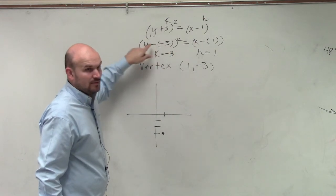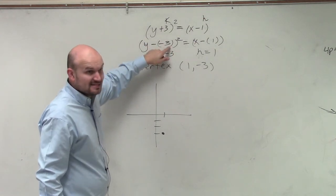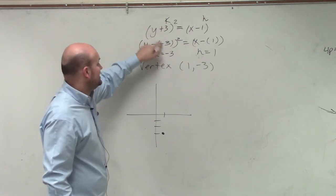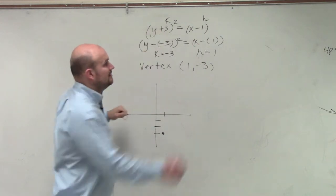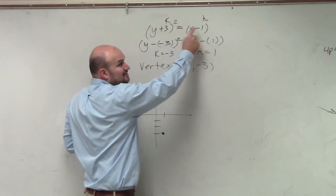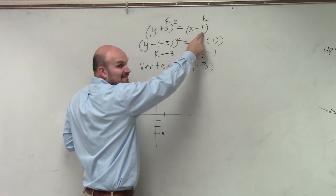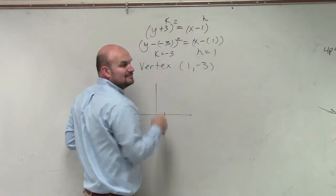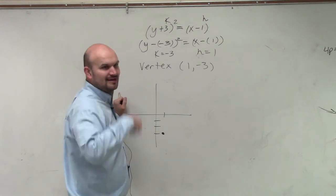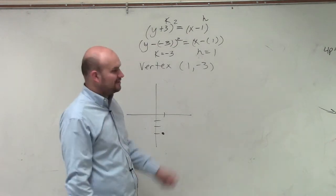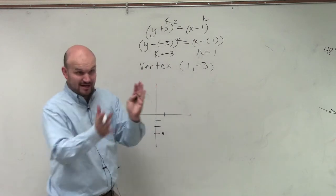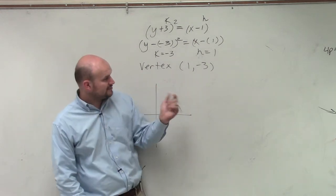y minus k. What is k equal to? Negative 3. So y minus negative 3. Minus a negative is the same thing as plus, right? x minus h. What is h? One. Oh, I just switched them. I thought you were asking another question. So you have h and k for your vertex.